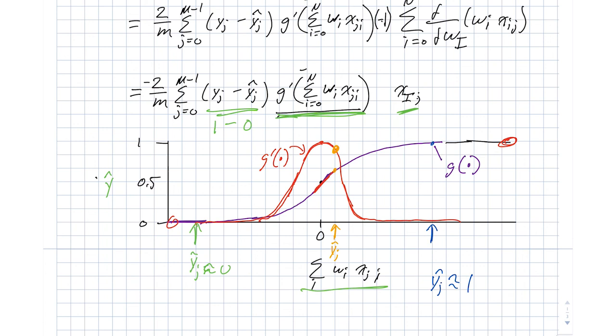So in this situation, even though we have this big error, the contribution to d e d w big I is, for this particular example, is actually arbitrarily close to zero. So that means we're not actually going to, in the next step of gradient descent, we're not actually going to make a big change toward repairing this particular example. So what this tells us is this cost function that we've chosen, this mean squared error cost function, really is not a very good choice.